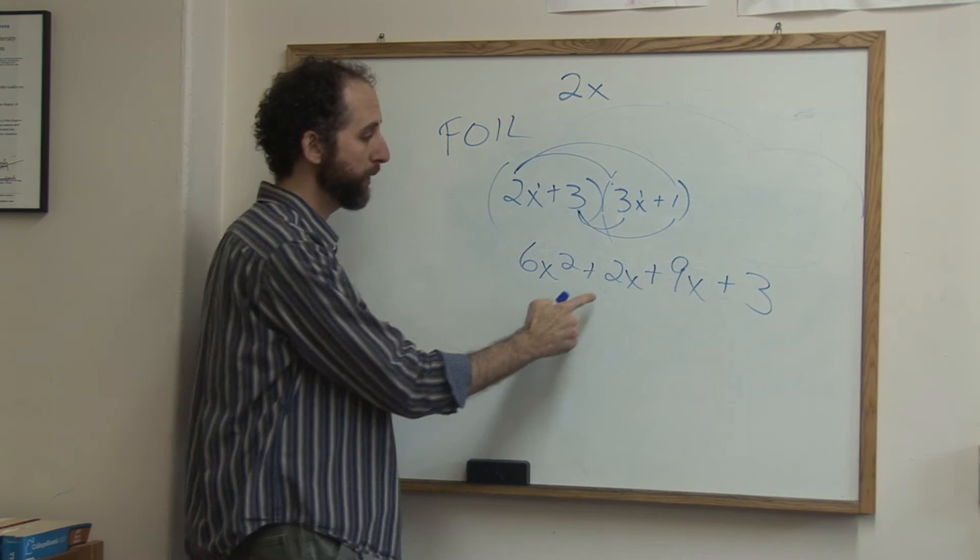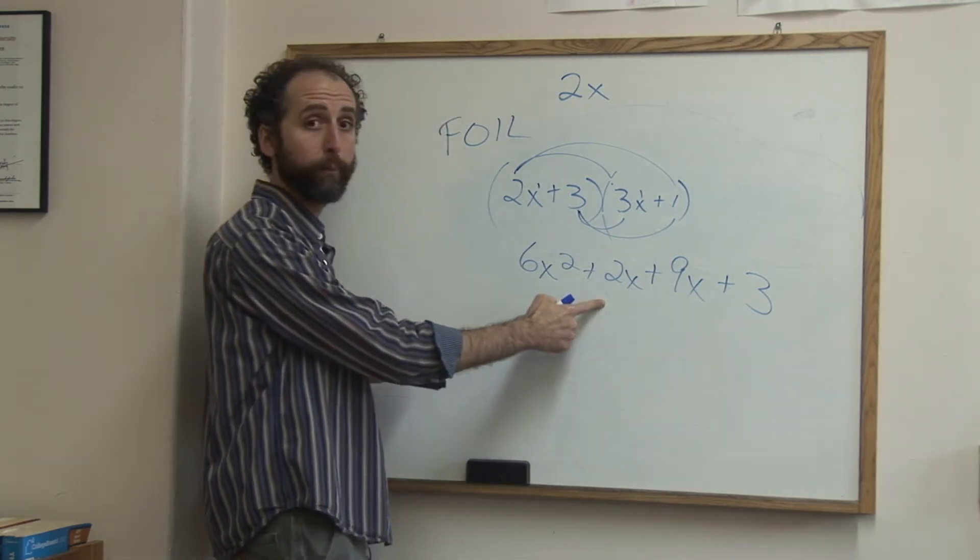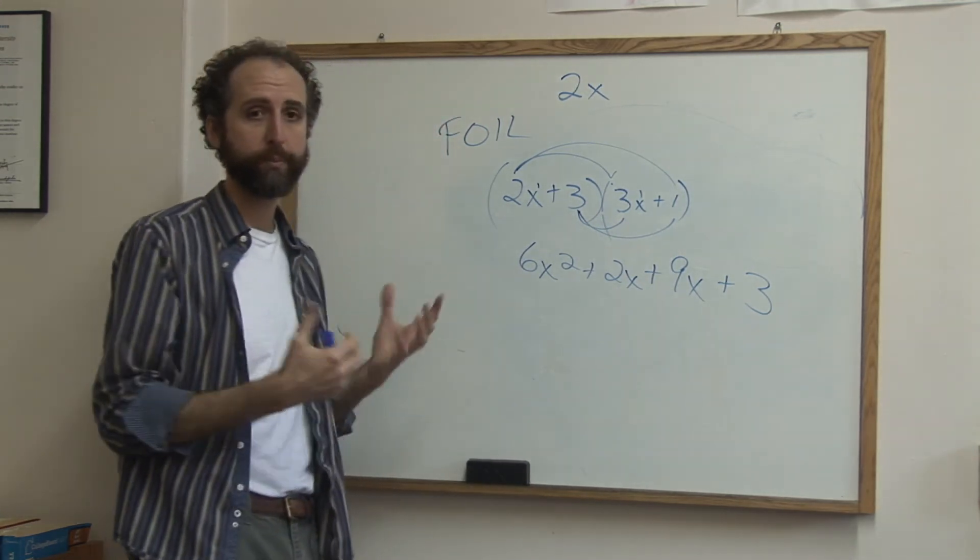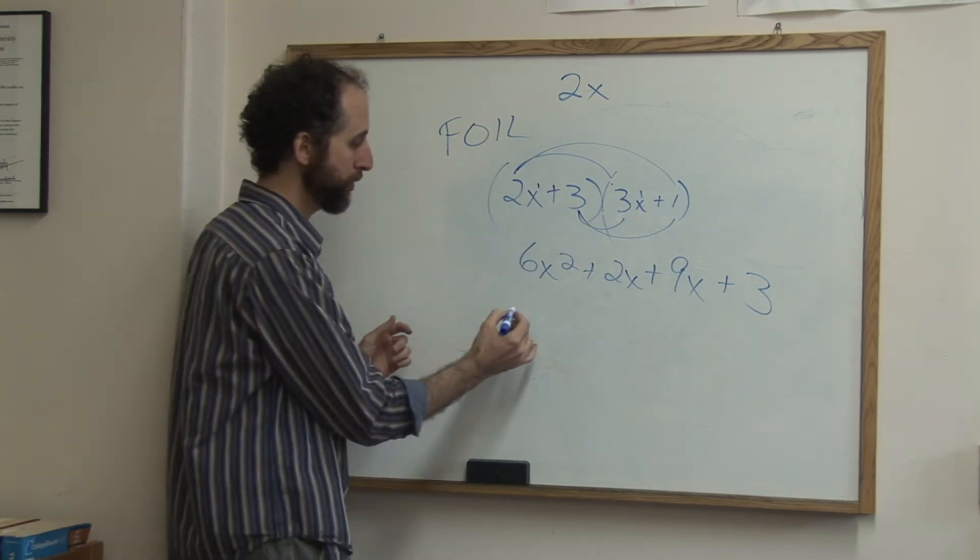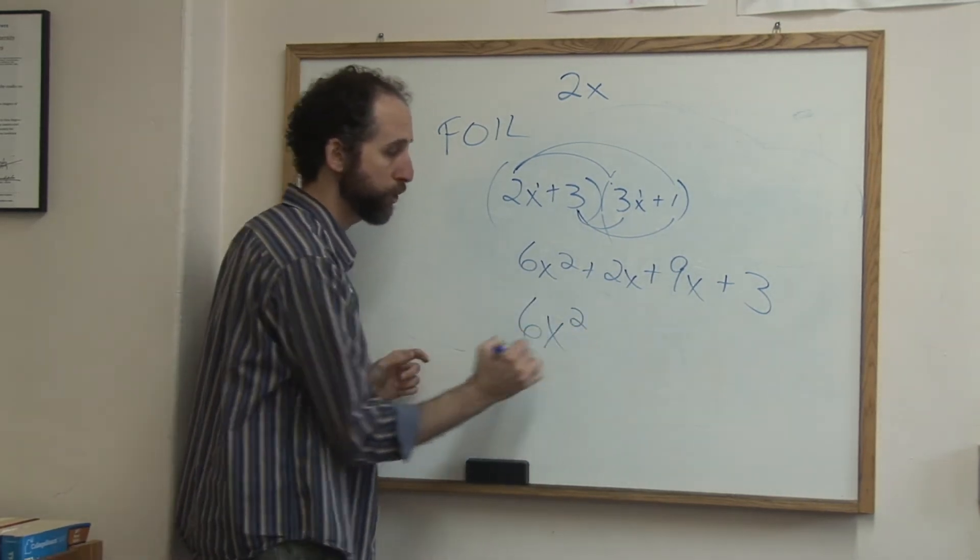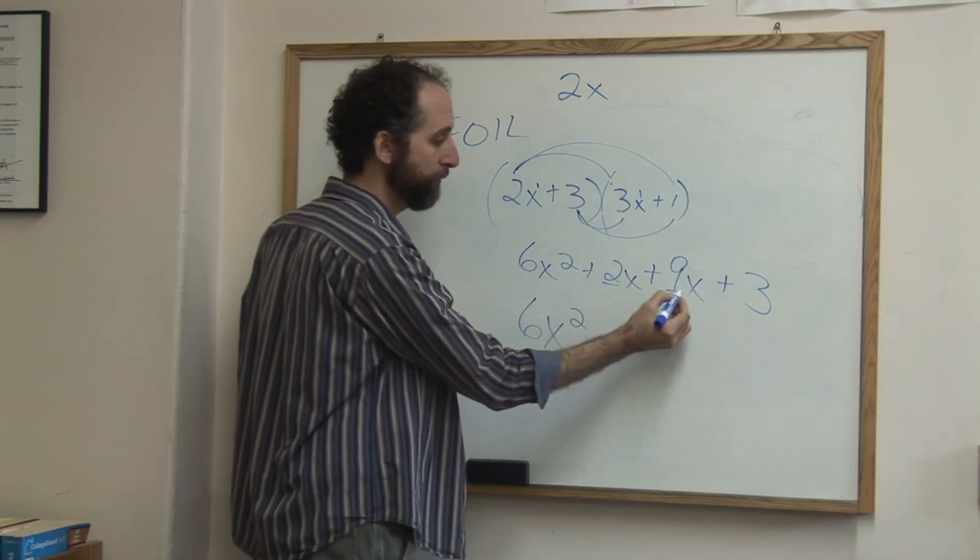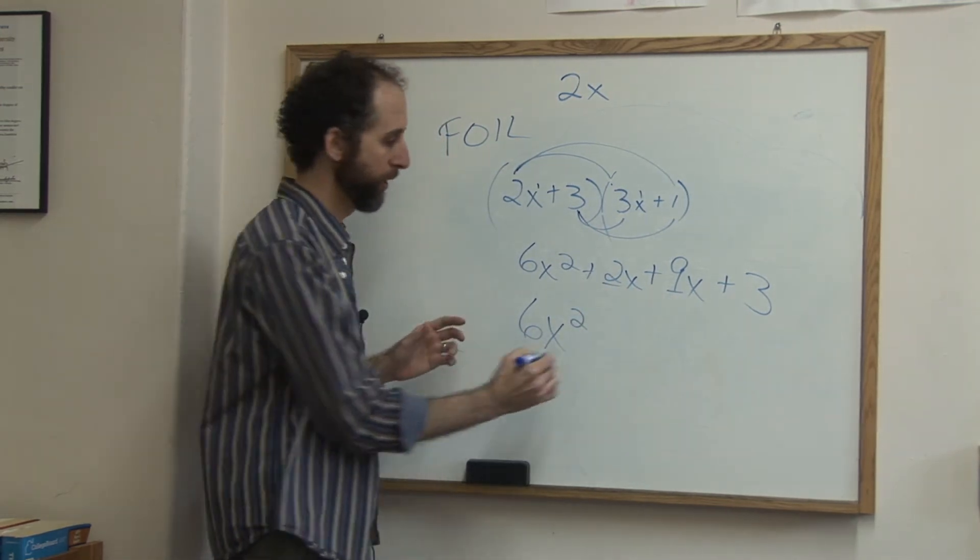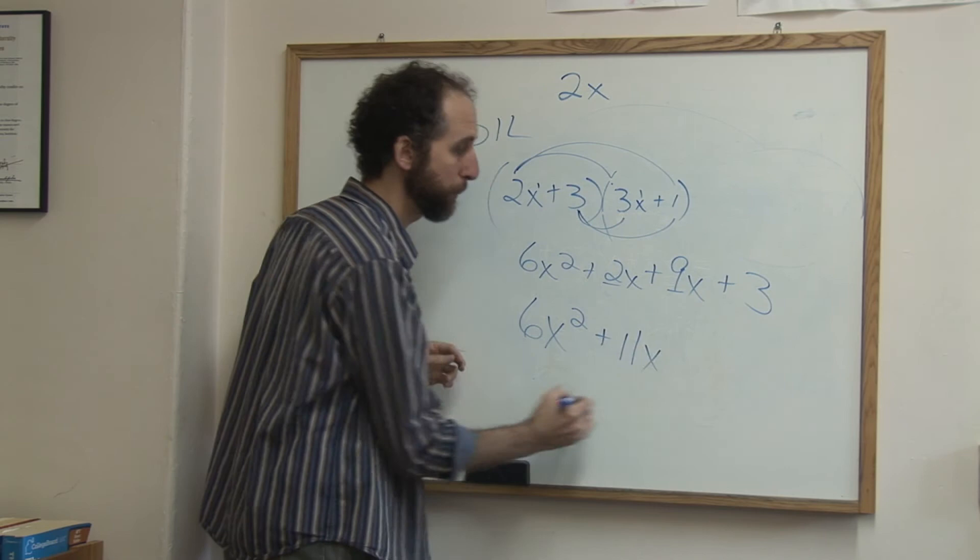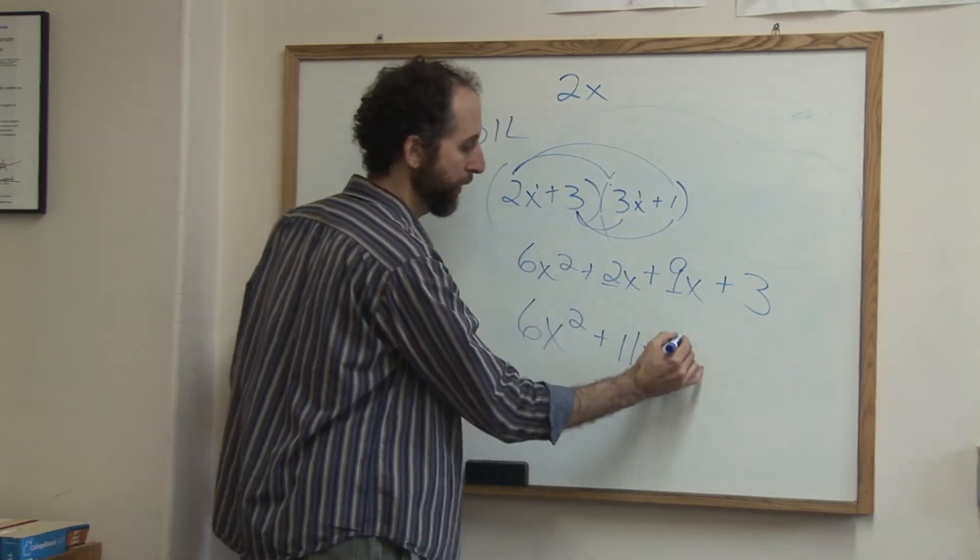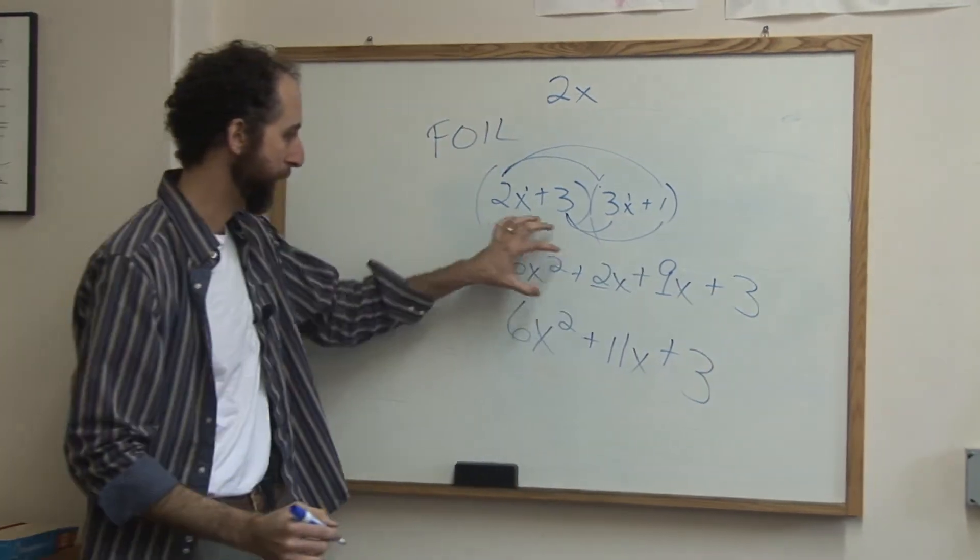Then the one last step is we combine the middle term. These two parts are like terms. That means that they can add up. So 6x squared, we don't change. 2x plus 9x, we add the coefficients. We add the number in front. So that's plus 11x, and then we just put that part on. That doesn't combine with anybody. So that part drops.